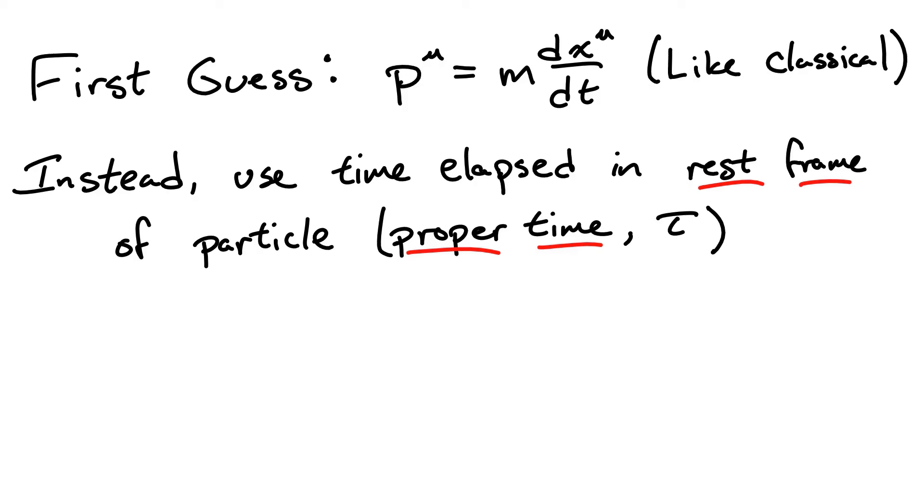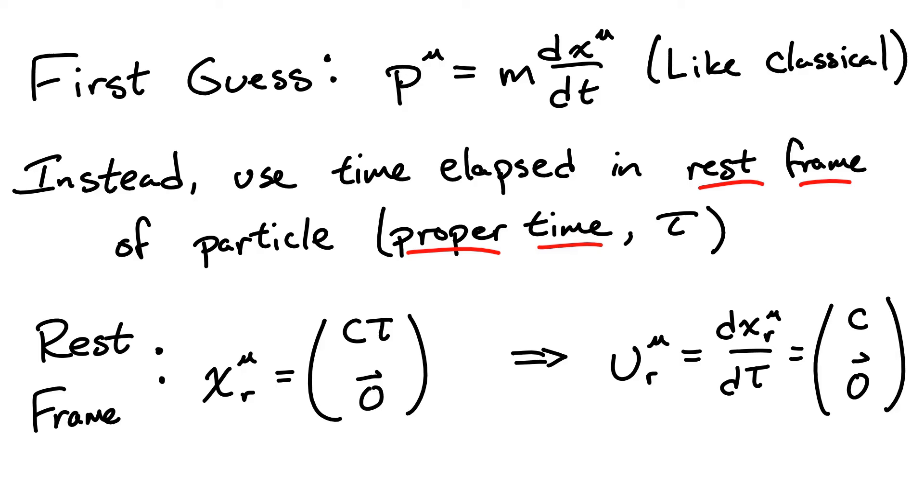So, we can find the proper 4-velocity of a particle by considering its evolution in its rest frame, where it will have a fixed spatial position and simply be evolving at a rate the speed of light times tau through its proper time. Taking a derivative with respect to this proper time, we find that the particle is simply moving through time with a temporal velocity c.